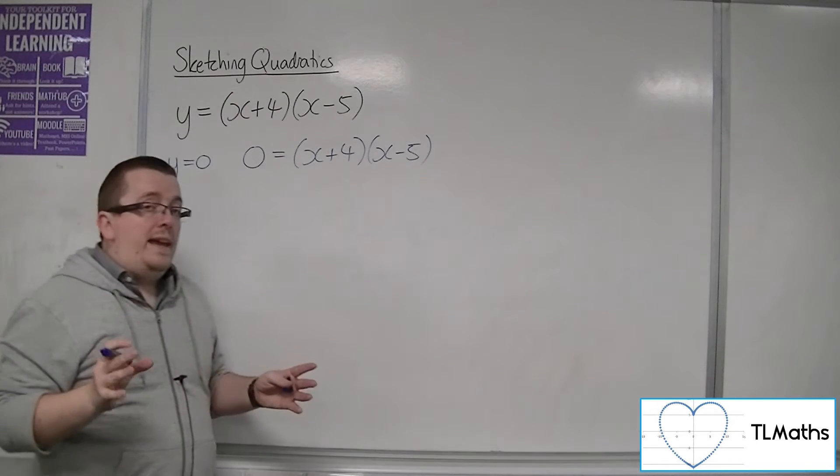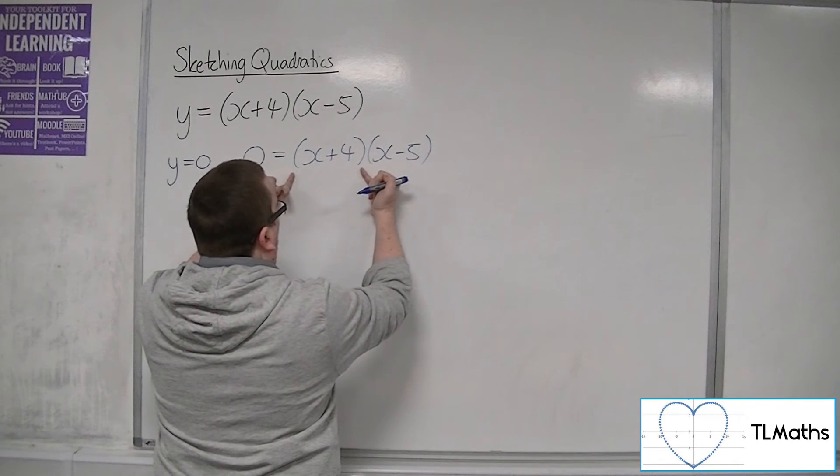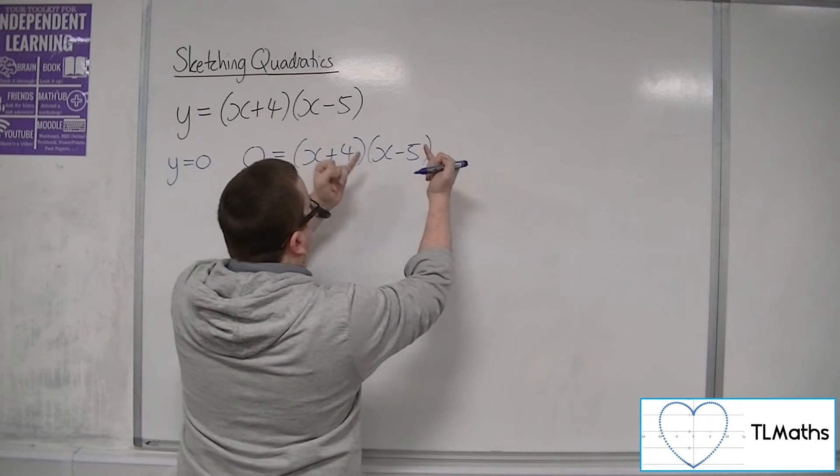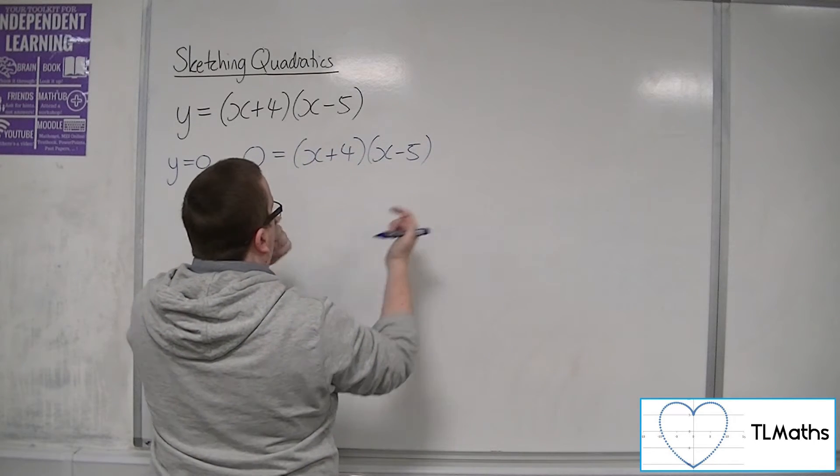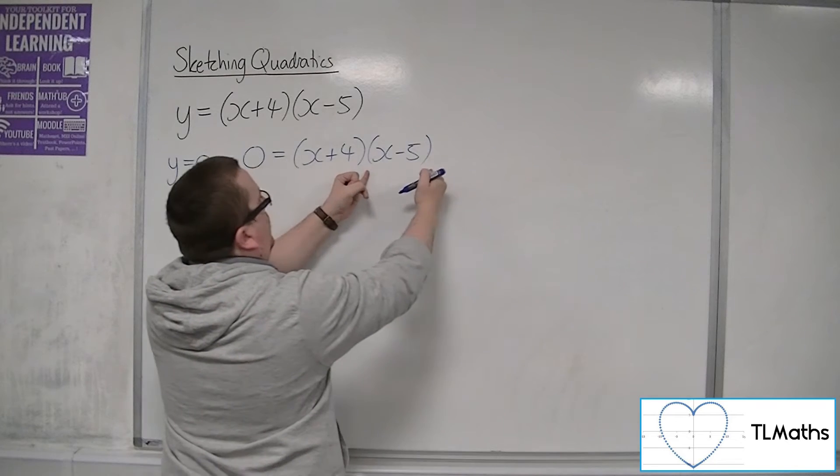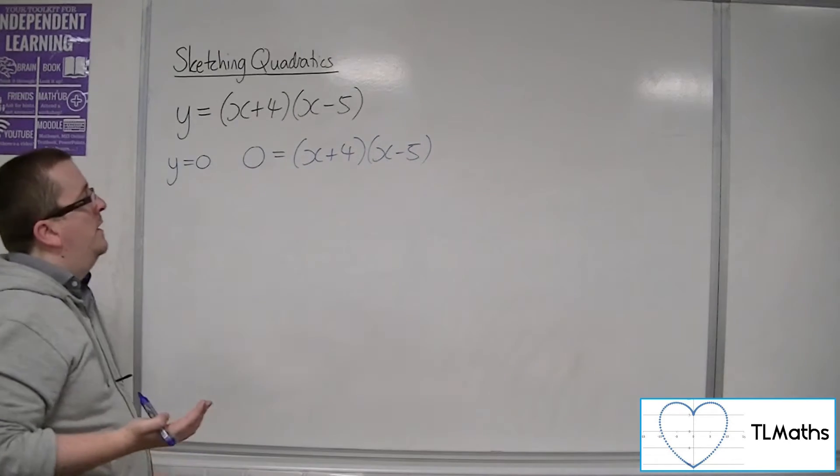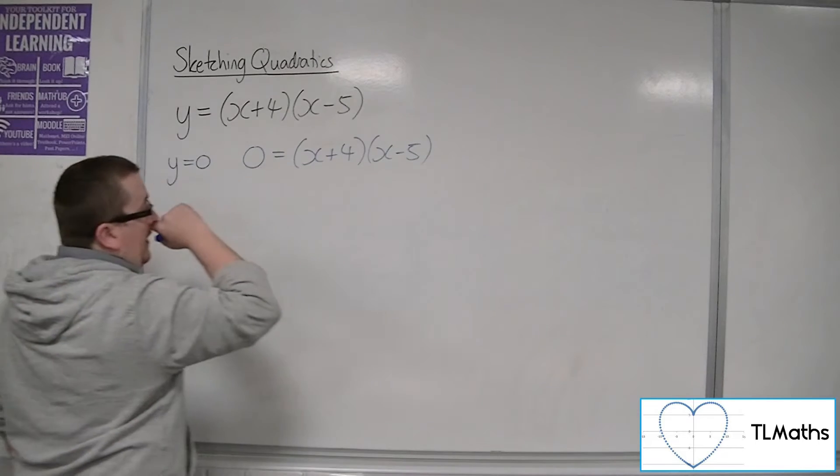So, we're going to put 0 equals (x + 4)(x - 5). What we're saying here is that either x + 4 is 0, because then we've got 0 times something, which would obviously be 0, or x - 5 is 0, which would mean 0 times something, which would clearly be 0.